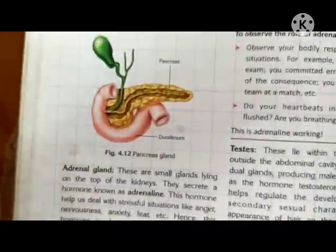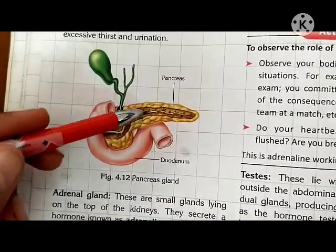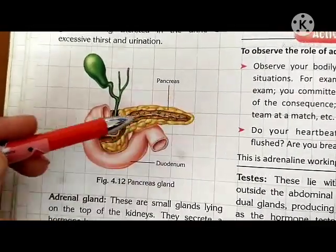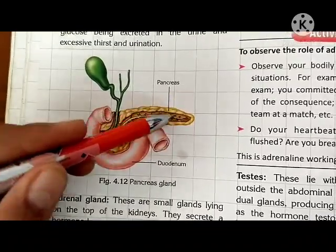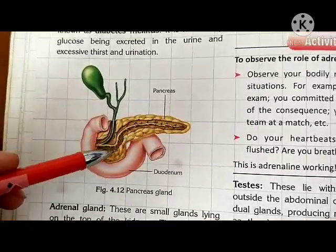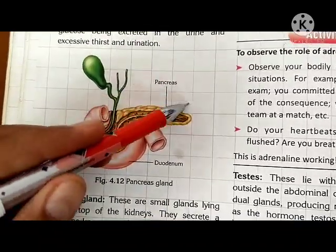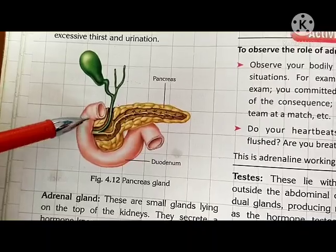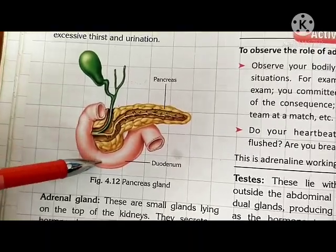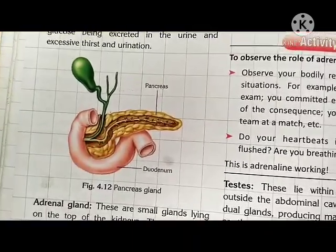This is the structure of the pancreas — the yellow structure. Above the pancreas you can see the stomach, and this pink part is the duodenum.